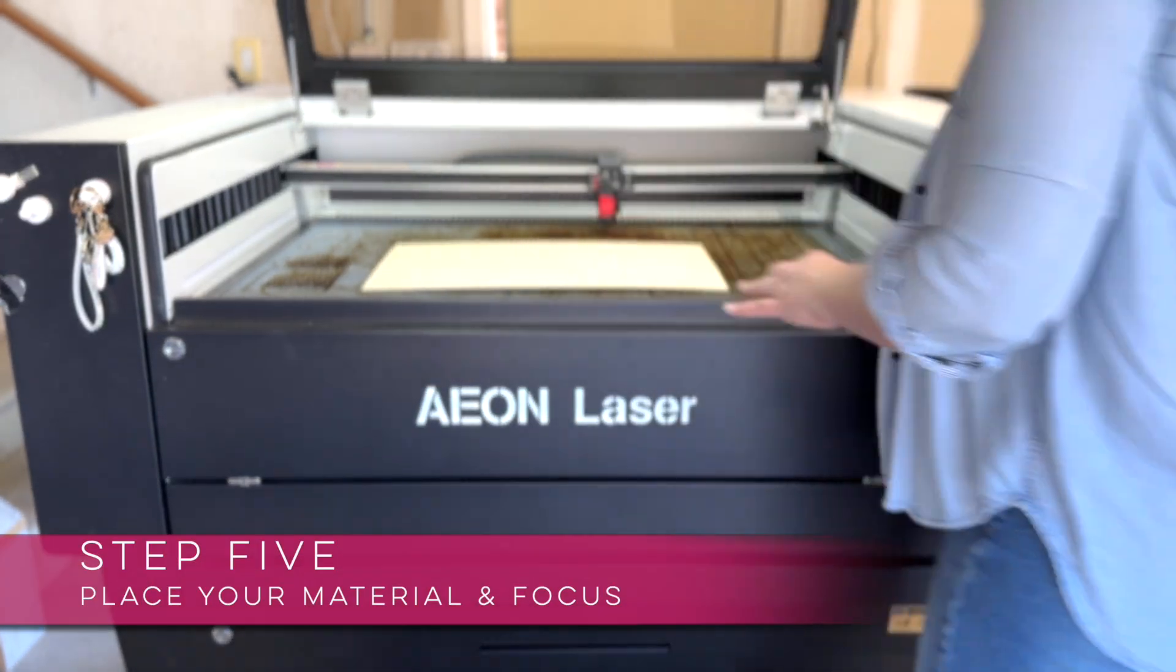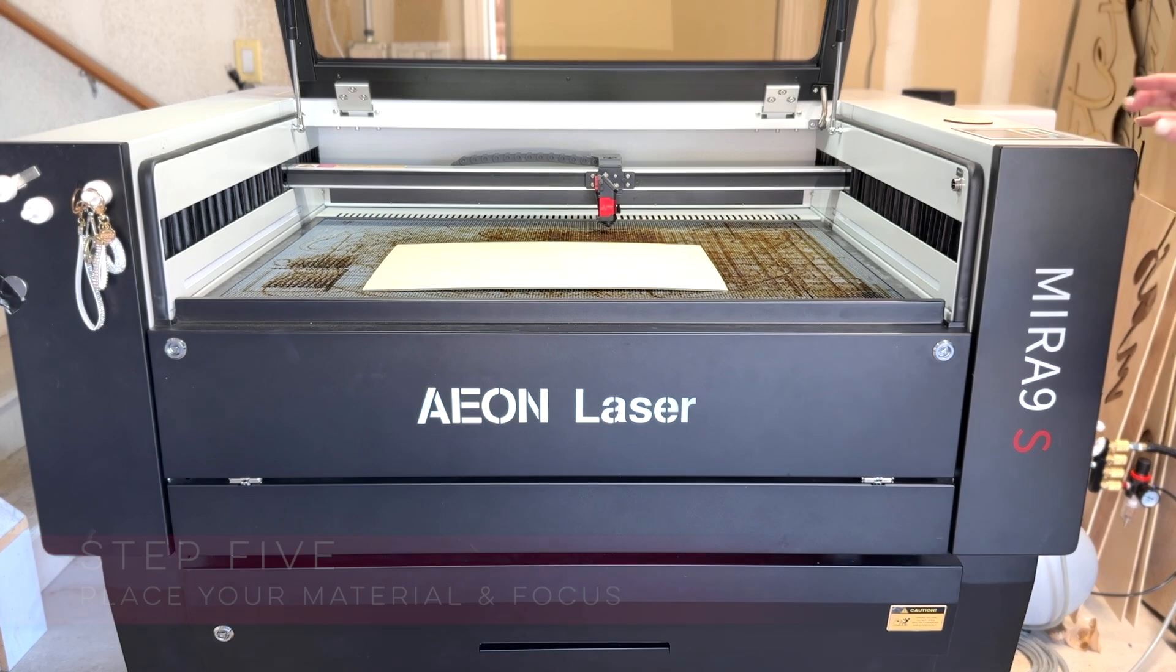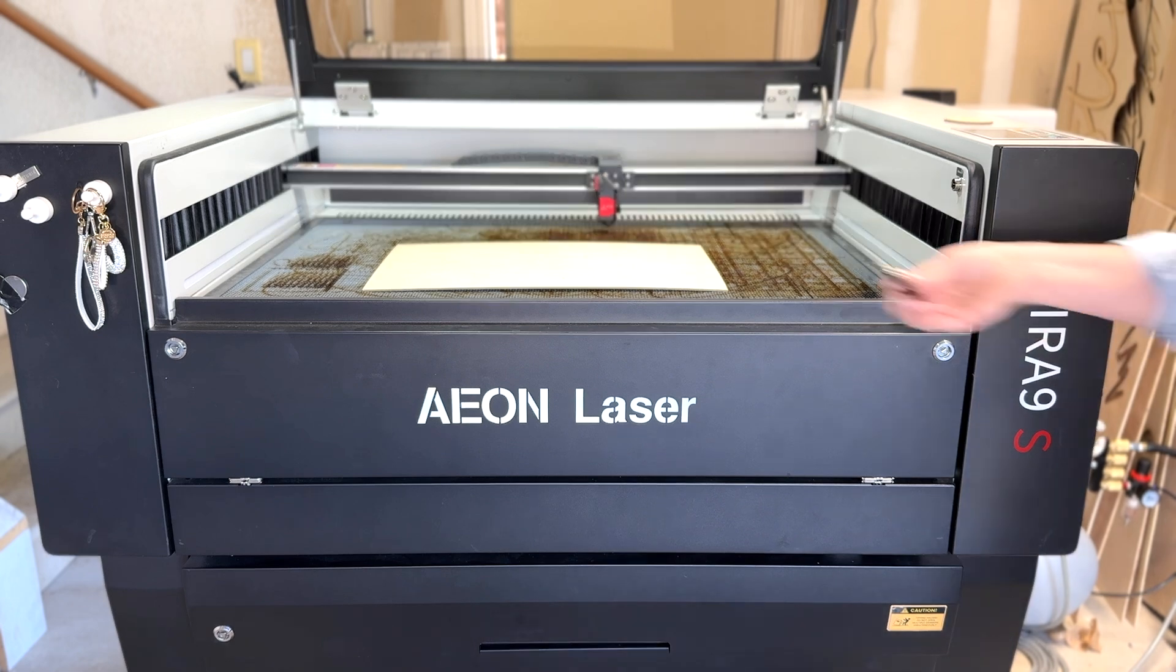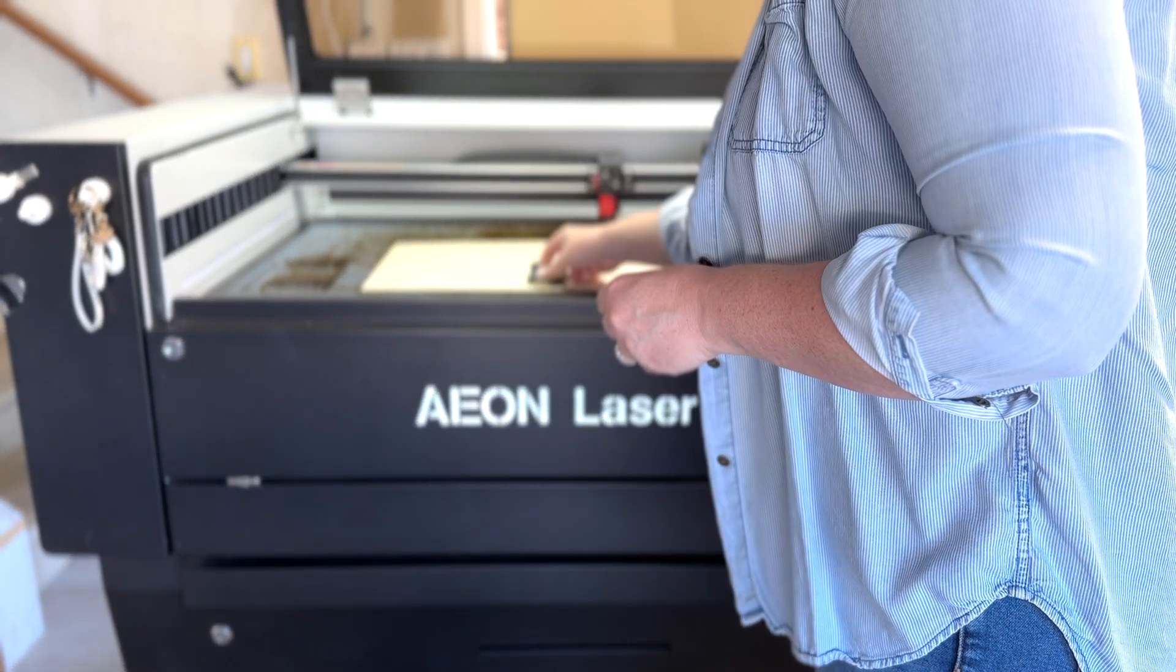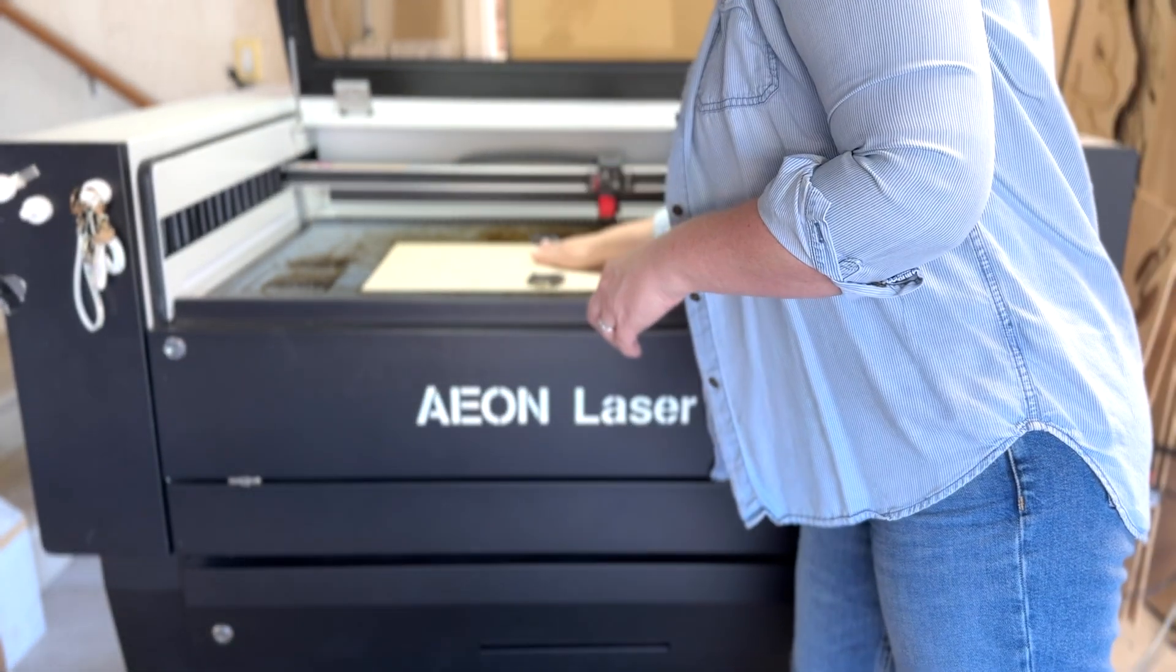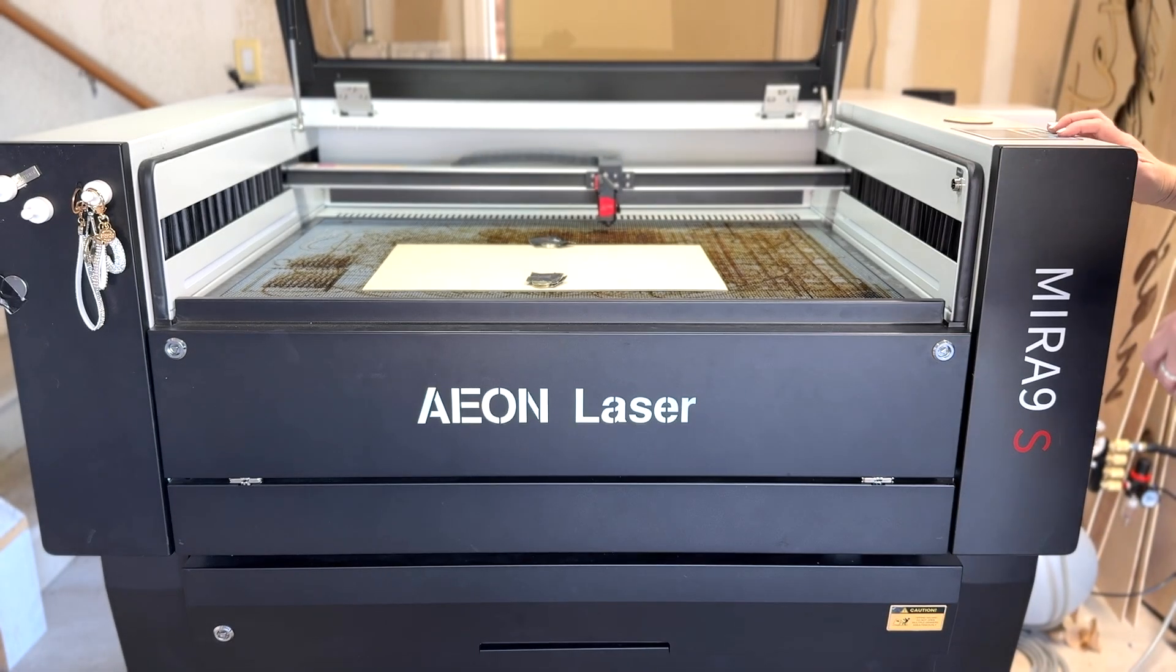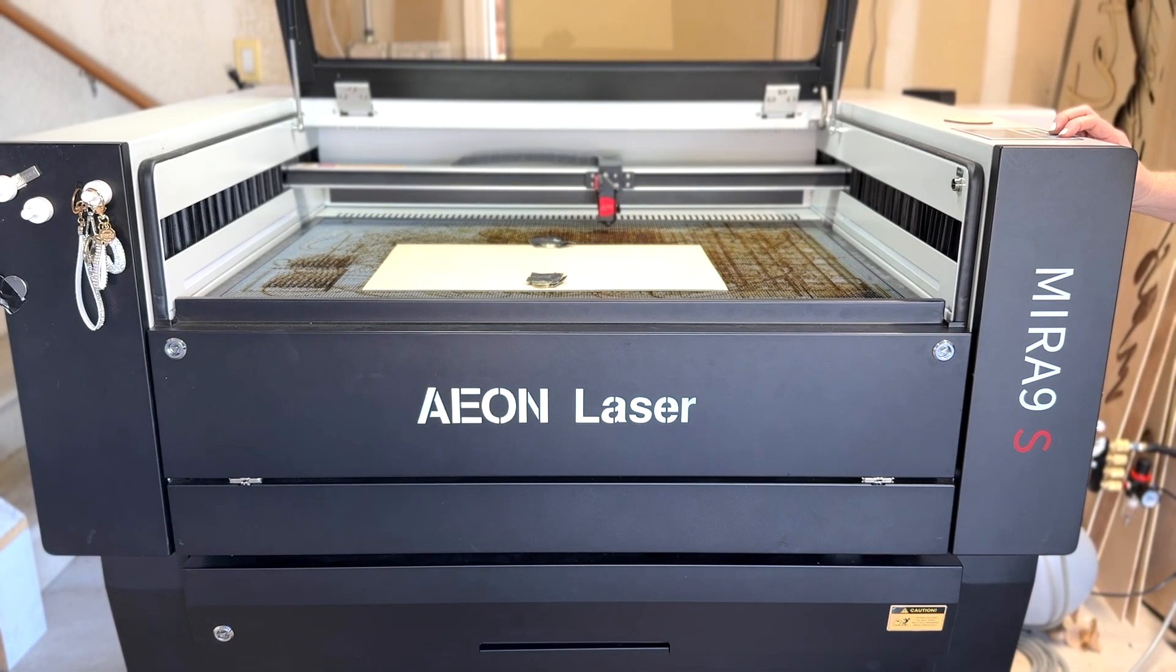Step number five is to place your material and bring it into focus. I'm using some Baltic birch plywood here, it's very inexpensive and it does tend to warp as you can see, so I'm going to grab a couple magnets and just hold it down onto the bed to prevent a little bit of that warping as I do my cutting.